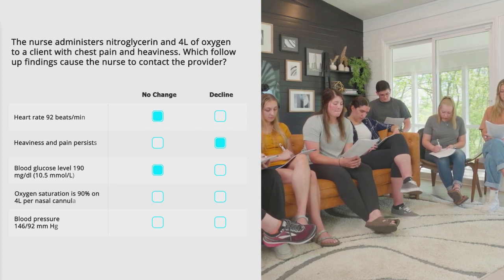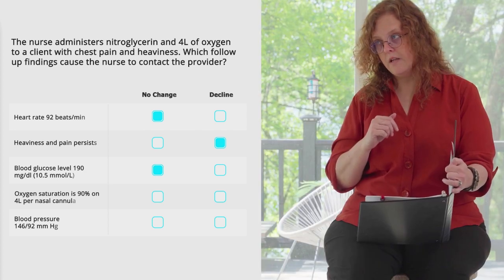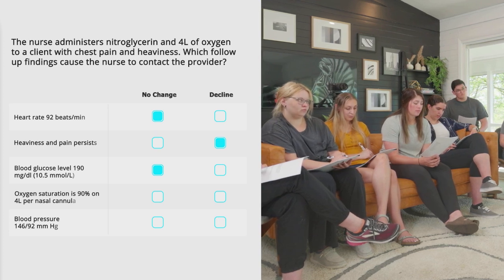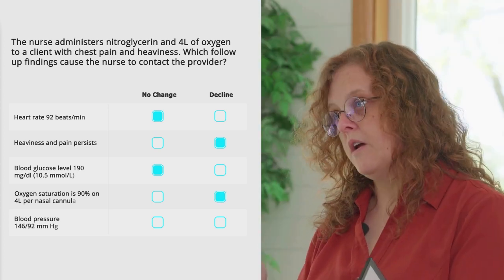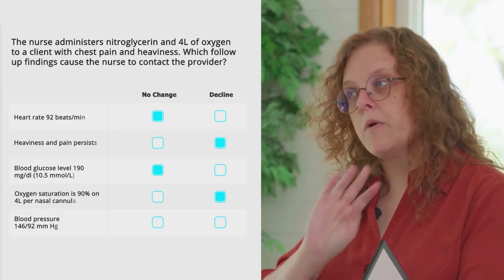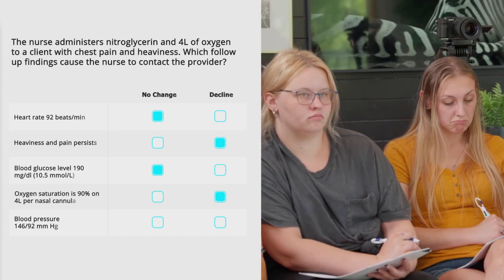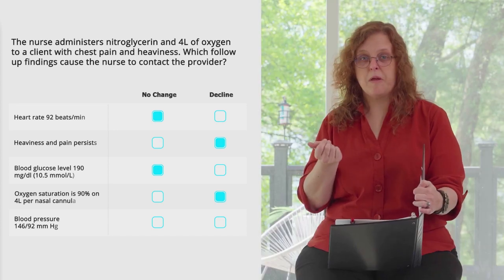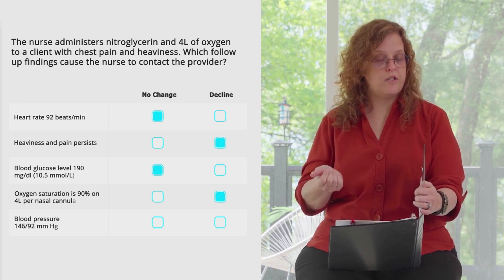Oxygen saturation of 90% on four liters per nasal cannula — that's worse, we want it to go up. You've got a cycle going where decreased oxygen makes the heart work harder, the heart works harder and needs more oxygen. Blood pressure 146 over 92 — lots of people walk around with that; we'd rather it not be there, but it's not the most concerning finding right now.